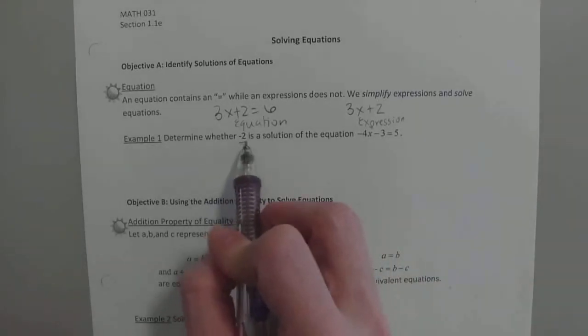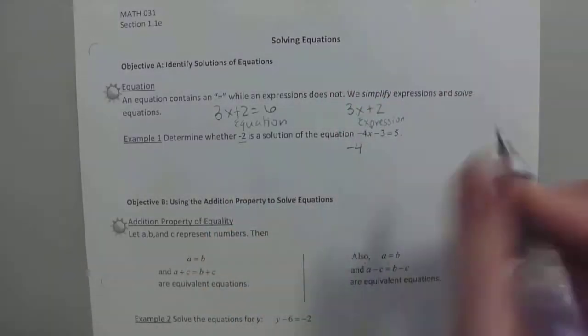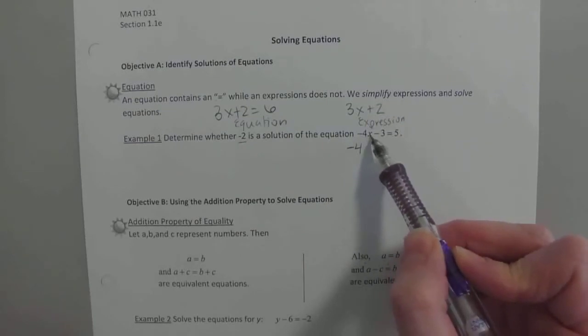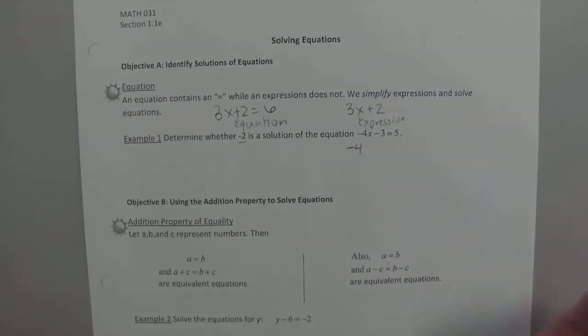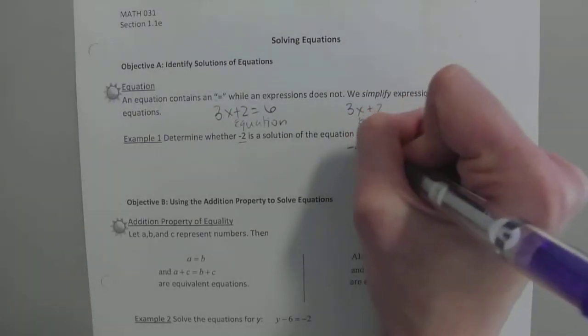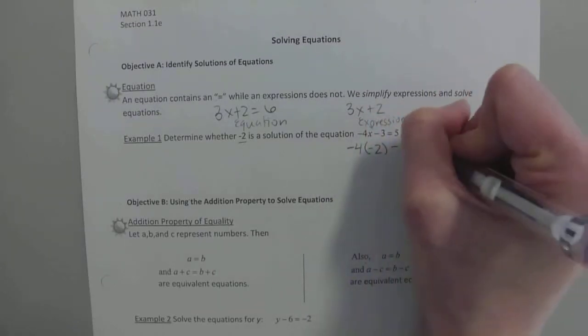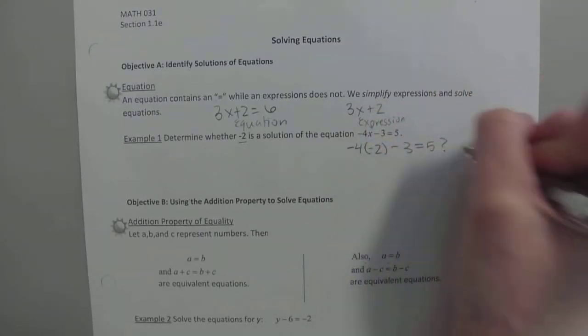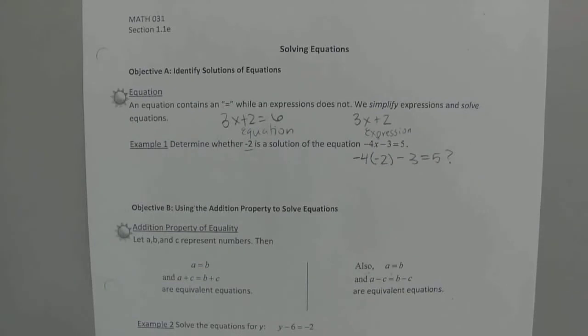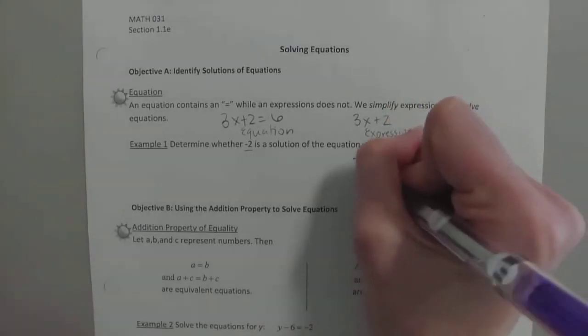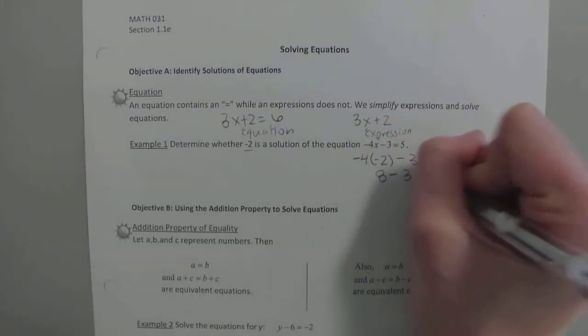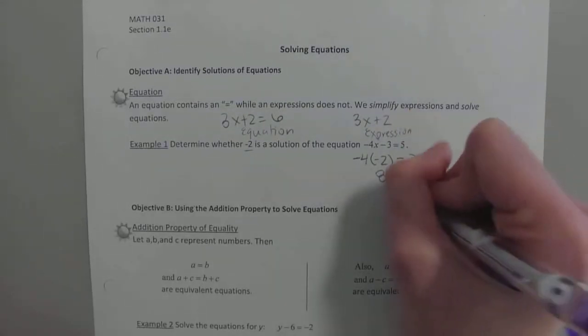So we want to plug this in for our x. We're going to have negative 4. And then what operation is this when they're right next to each other? Multiplication. So we're just going to have negative 4 times negative 2 minus 3. Does that equal 5? I always put a question mark there because when they ask us to check, we don't know necessarily if that's true or not. So negative 4 times negative 2 is 8. 8 minus 3 is 5. Is that true?